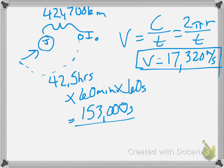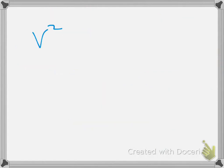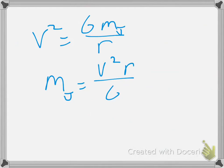17,320 meters per second is the velocity. So the question is, what is the mass of Jupiter? Well, if V squared is equal to big G times the mass of Jupiter divided by the distance between Jupiter and Io, then we rearrange this to find the mass of Jupiter, and that would be V squared times R divided by G.